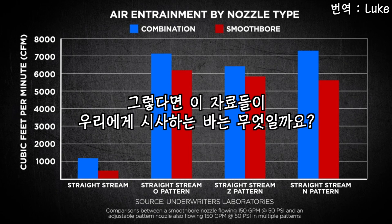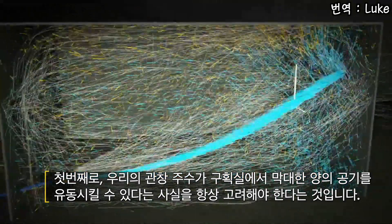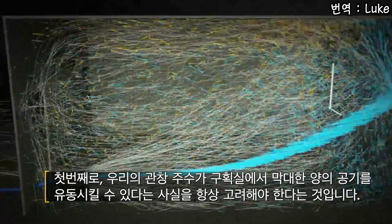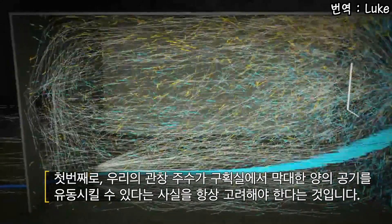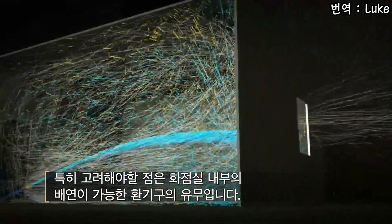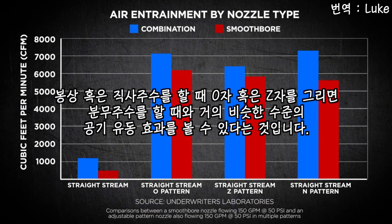So what do all these hard facts mean to us on the fire ground? First, we must always consider the massive amounts of air our fire streams move during the fire attack process while inside the fire compartment, with special consideration toward the ventilation condition. Second, we can see in these very simple tests that a solid or straight stream being moved in the patterns we have been taught has similar air movement volumes to that of a fog stream.